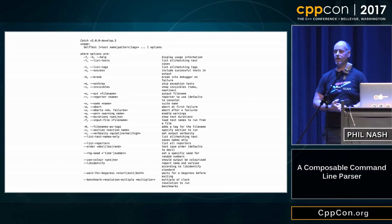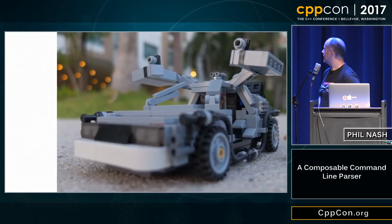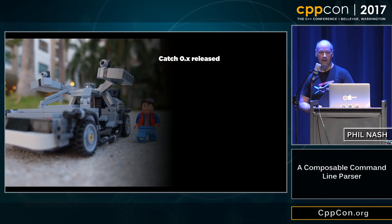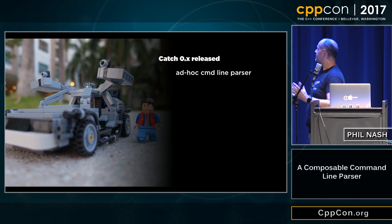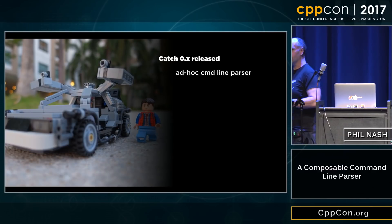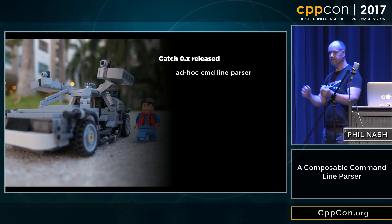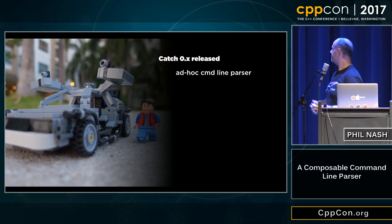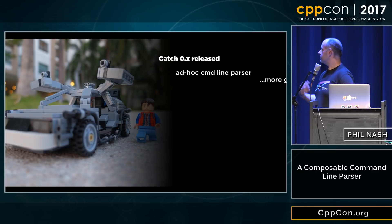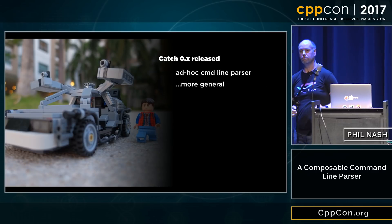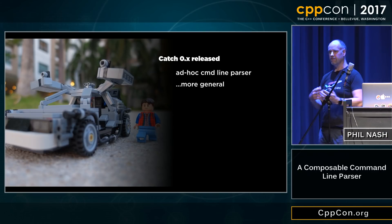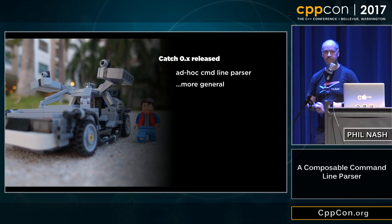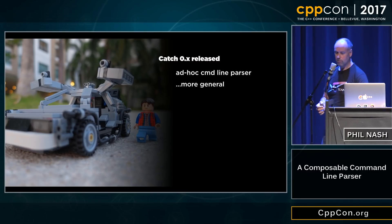But it wasn't always that way. If we look at a brief timeline of Catch, right at the start it just had a very basic ad hoc command line parser — just referenced argc and argv directly with some string matching. It was simple, but it worked. Of course, over time they did more and more things: more options, string conversions, error handling, and those usage strings became more and more general.